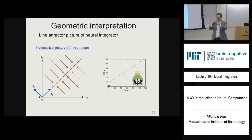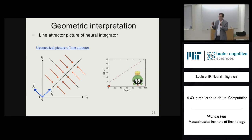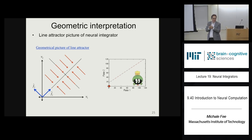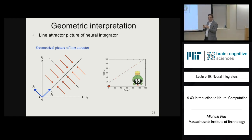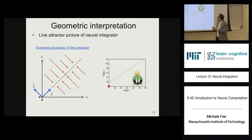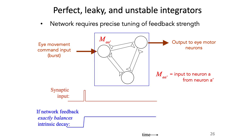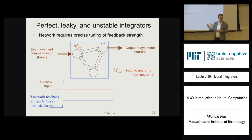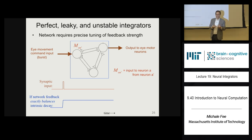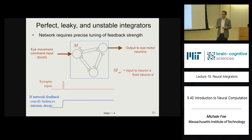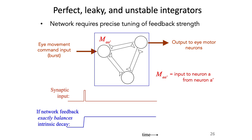There are about a couple hundred neurons in area 1 that connect to each other. What's not yet fully known is whether the connections between those neurons have the right synaptic strength to give an eigenvalue of 1 in that network. It's still an open question whether this model exactly describes how that network works, but Tank and others in the field are working on that hypothesis.